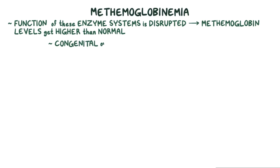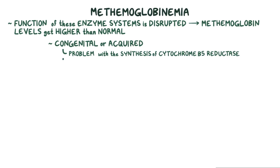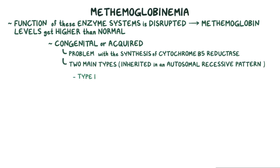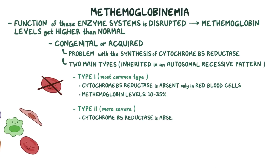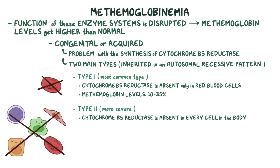Methemoglobinemia can be congenital or acquired. In congenital methemoglobinemia, there's a problem with the synthesis of cytochrome B5 reductase. Two main types exist, and both are inherited in an autosomal recessive pattern. In type 1, which is the most common type, cytochrome B5 reductase is absent only in red blood cells, and methemoglobin levels typically range from 10 to 35%. Type 2 is much more severe because cytochrome B5 reductase is absent in every cell in the body, and methemoglobin levels are much higher than 35%.